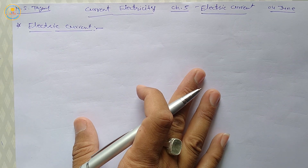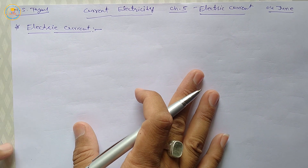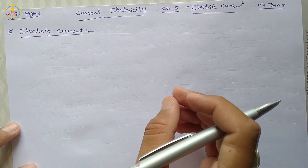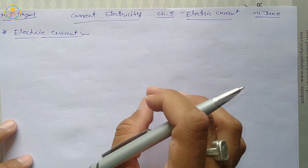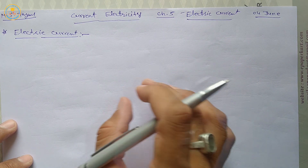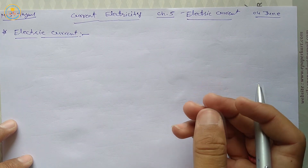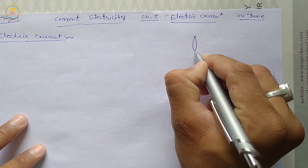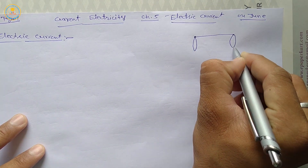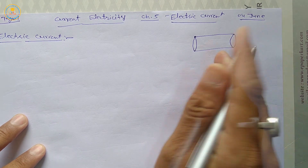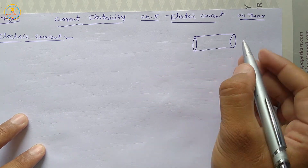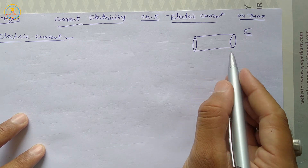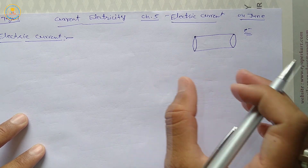In small classes we have studied electric current. So what is electric current? The rate of flow of charge in the conductor is called electric current. Suppose we have a conductor — in this conductor, the rate of flow of charge, meaning electron charge, is called electric current.